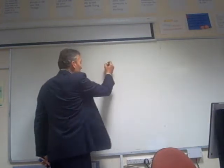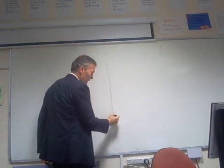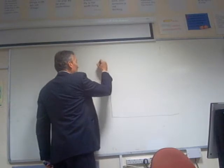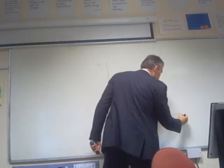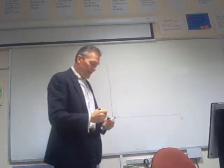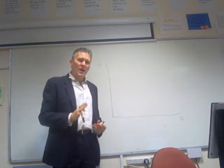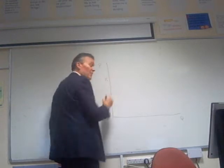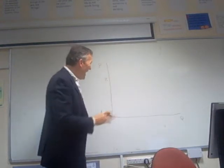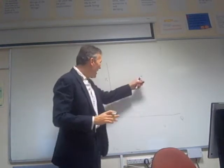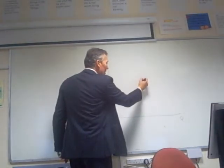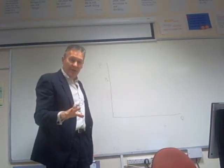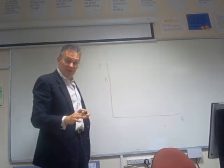We start with a diagram showing price on the y-axis and quantity on the x-axis. We know that firms within an oligopoly will be operating at a price of, say, P1. At this stage, they will be highly reluctant to operate at any price above the set price within the oligopoly.